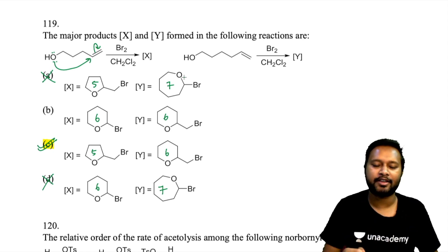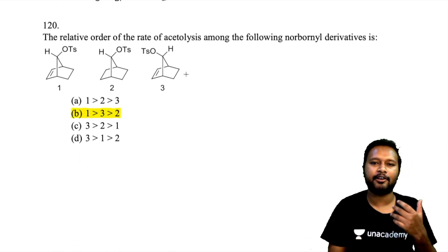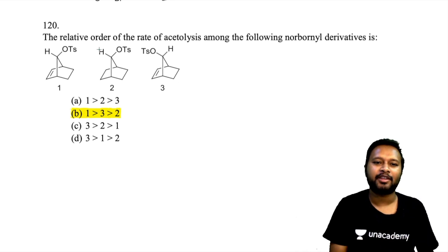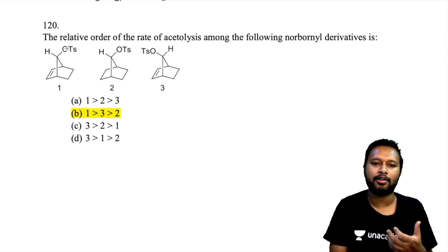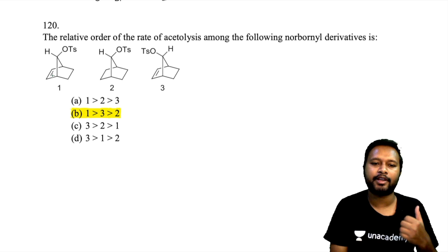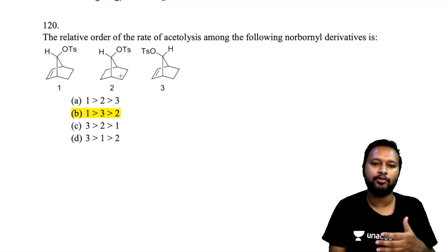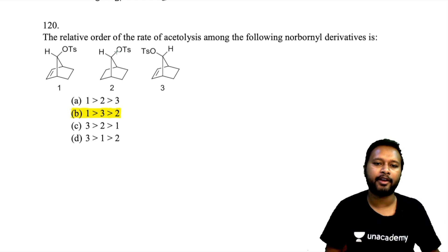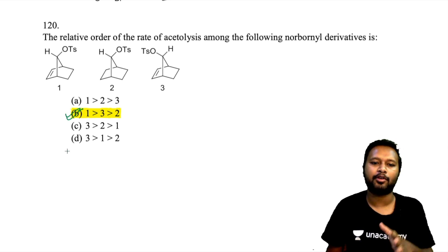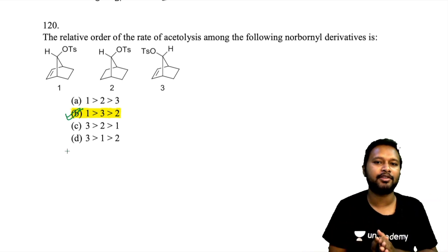The final question is on neighboring group participation and relative rates. A double bond anti to the OTs group can facilitate ejection of OTs through anchimeric assistance — greatly accelerating the rate. A cis double bond is less effective in assisting. With no double bond present, there is no neighboring group participation and the rate is slowest. Reactivity order: anti-double bond > cis-double bond > no double bond; option B is correct.